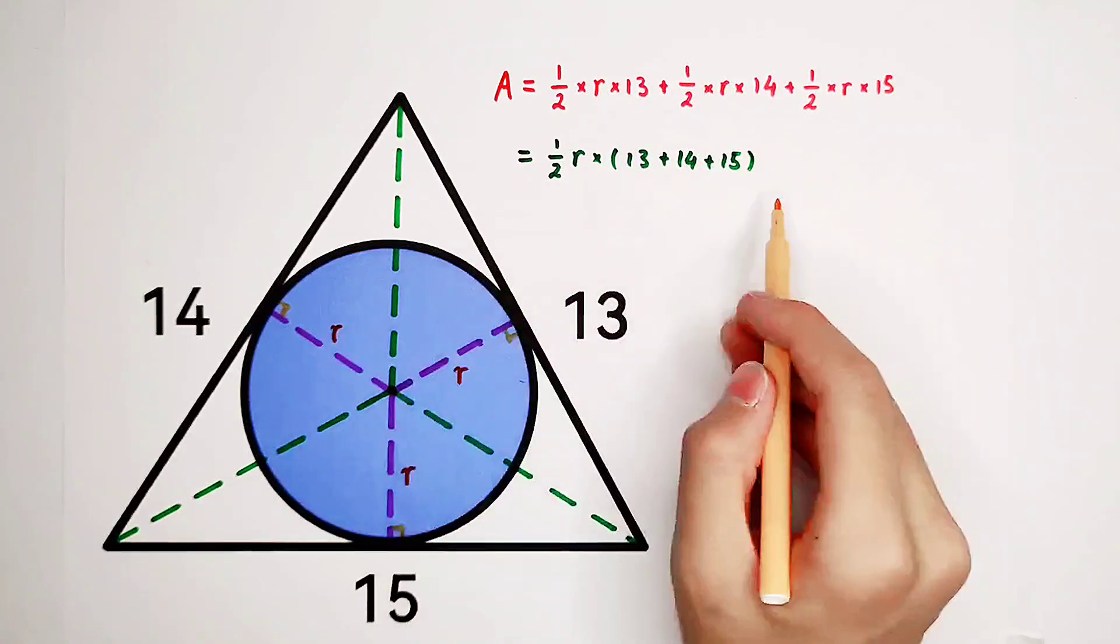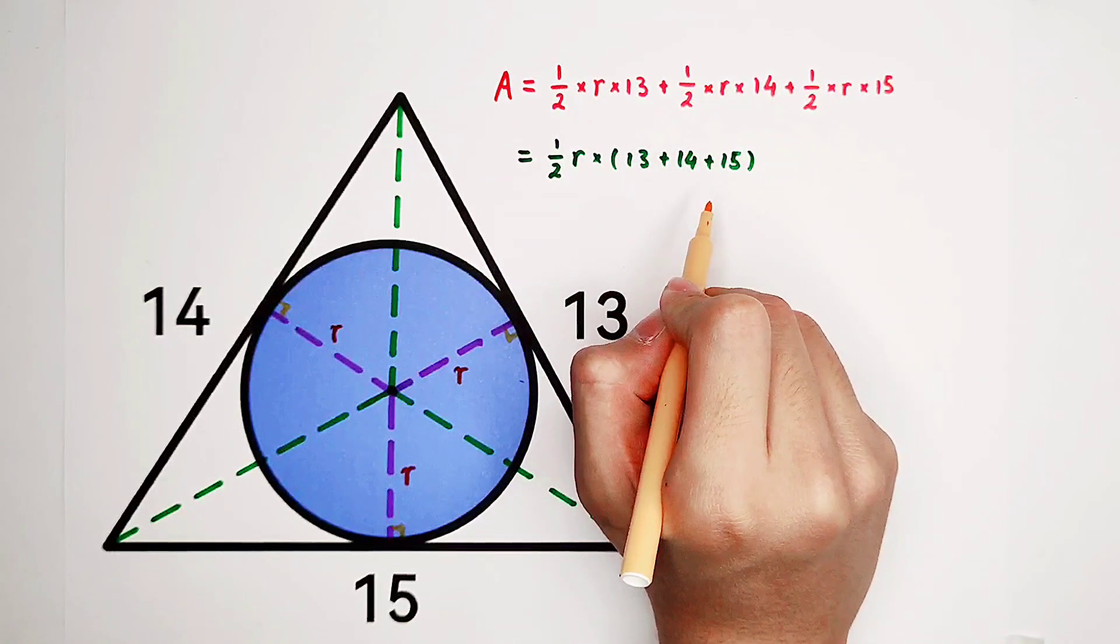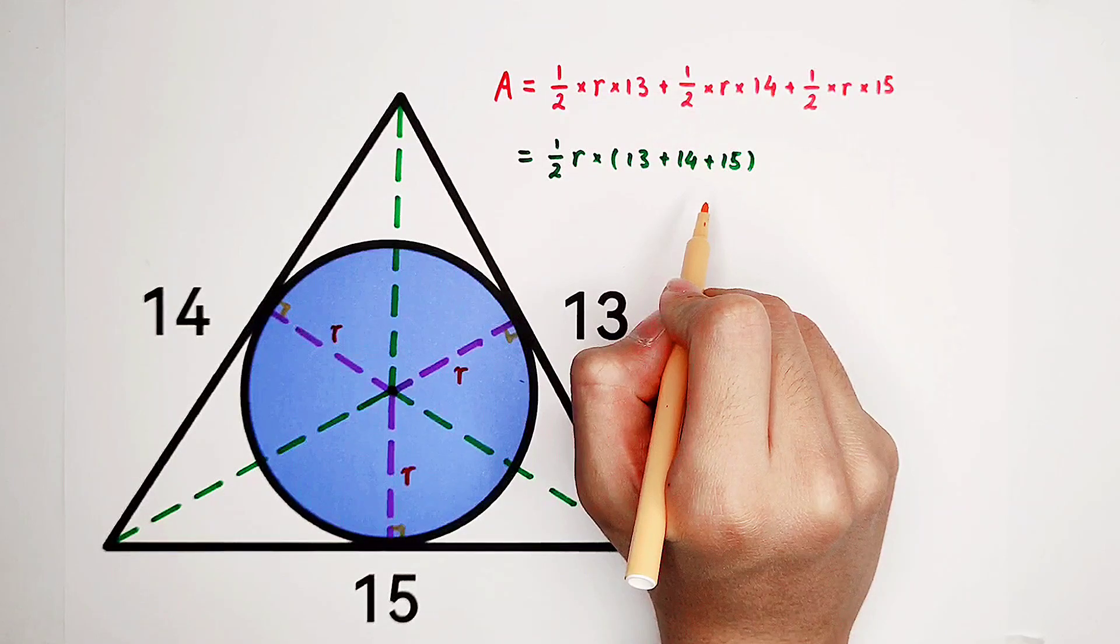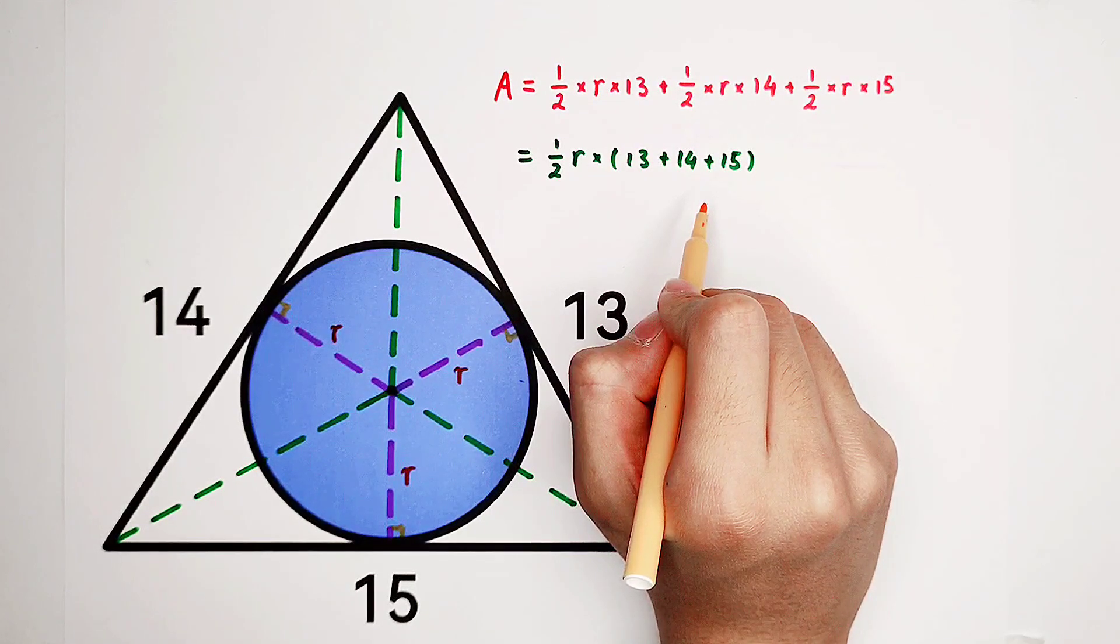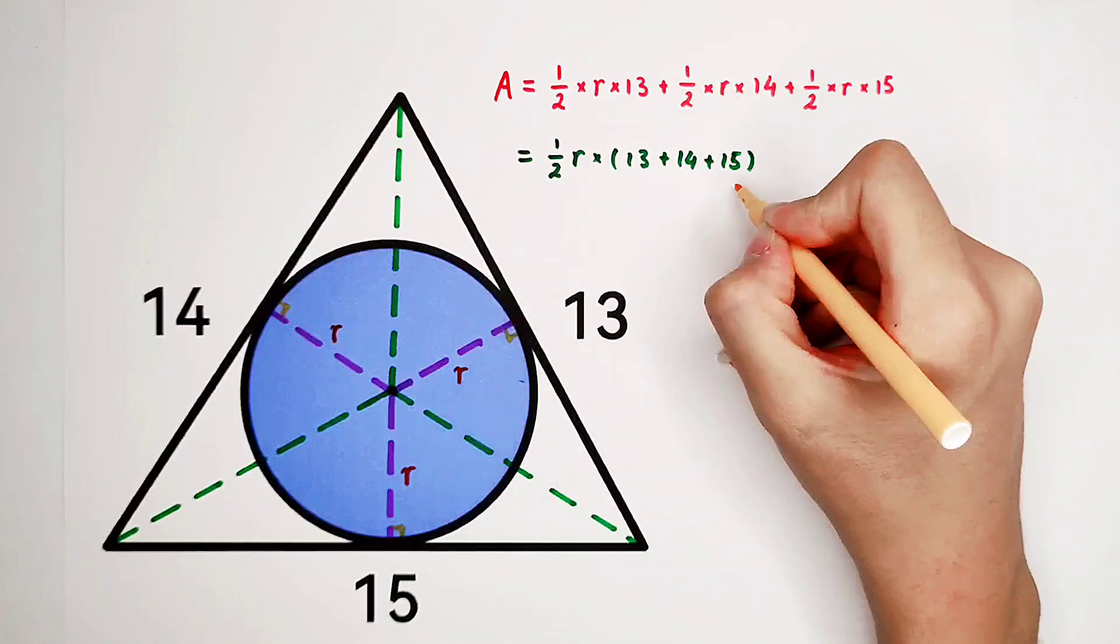Work it out. 13 plus 14 plus 15. Its value is 42. So here is 42.